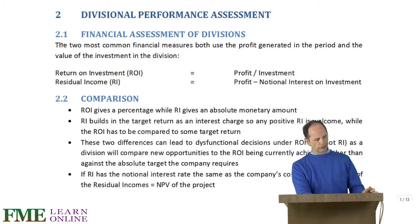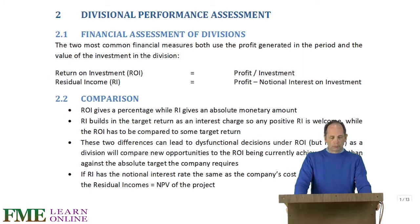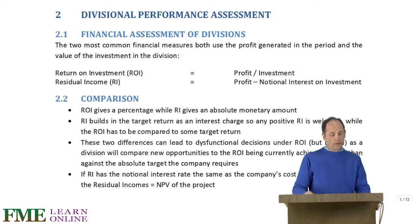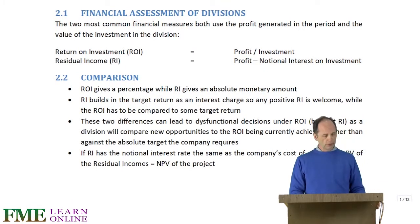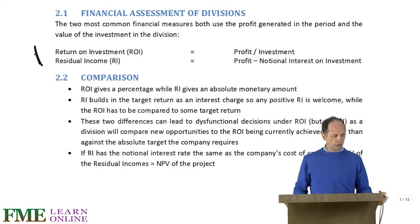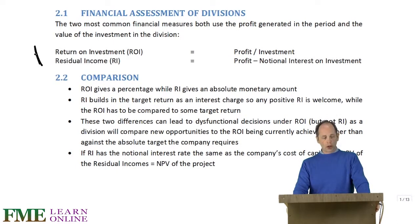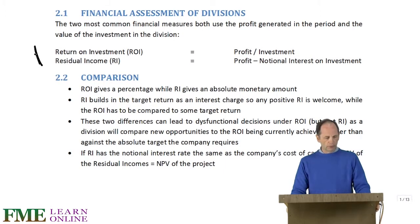So, having established that, how do we assess their performance? Very commonly it is connected to bonuses and remuneration of those managing the divisions. The two most common measures used for divisions have very similar names, which are quite confusing: Return on Investment, commonly called ROI, and Residual Income, commonly called RI.